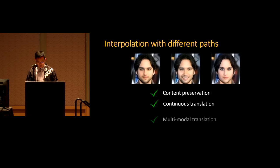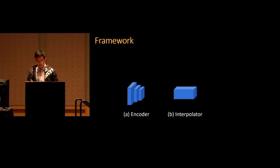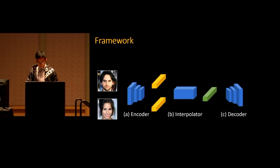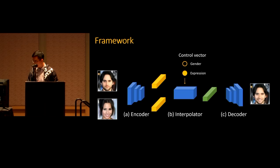For example, to make a non-smiling person smile, we choose a path that changes the expression first and then changes other attributes later — so the first part of the path only changes the expression and the image content is preserved. The interpolation-based framework naturally allows for continuous translation. Using a different reference person leads to another type of smiling, suggesting our framework can handle multi-modal translation. By choosing another path, we can change another attribute like gender. Our model contains an encoder, an interpolator, and a decoder. Given a target and reference image, the encoder maps them to an interpretable latent space, the interpolator interpolates these features via a control vector, and the decoder inverts the features back to image space.